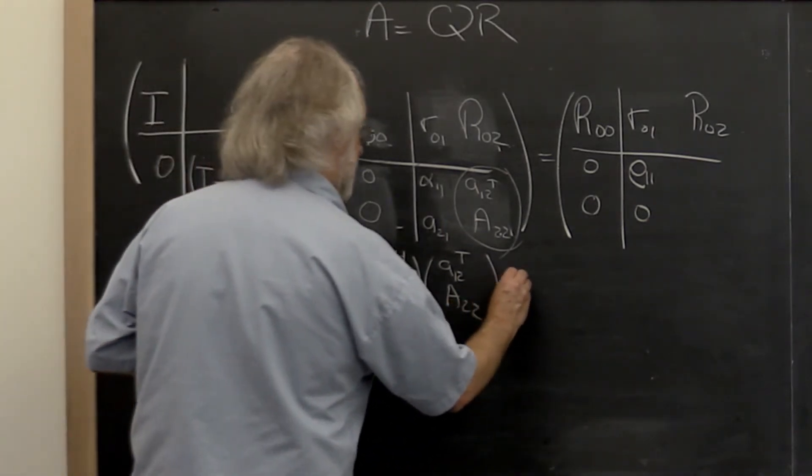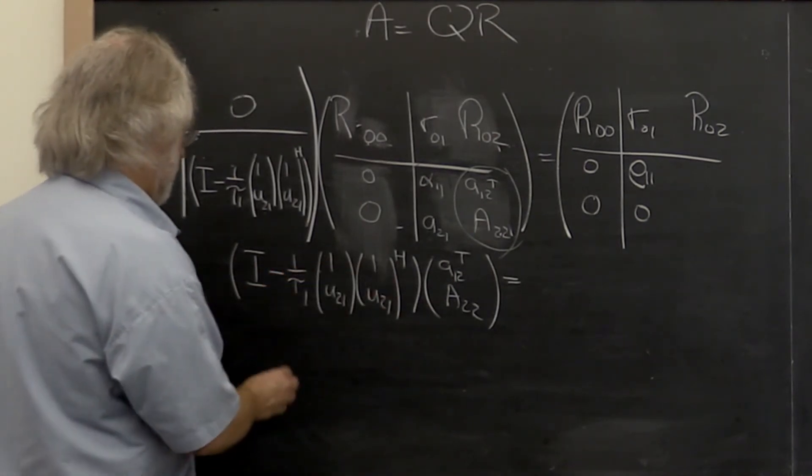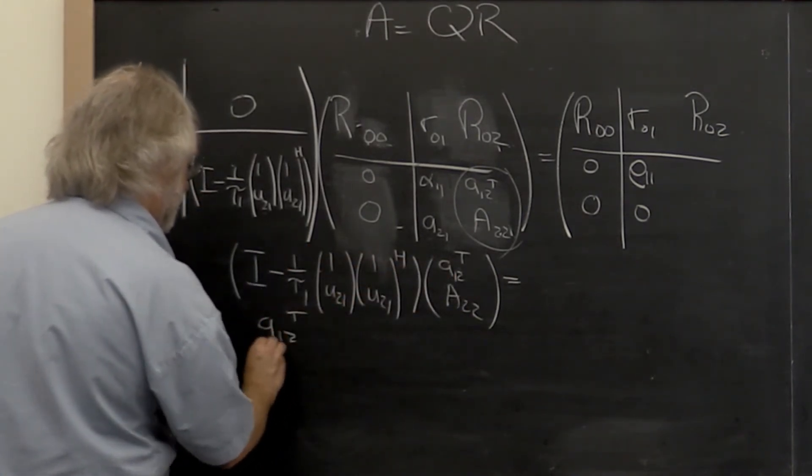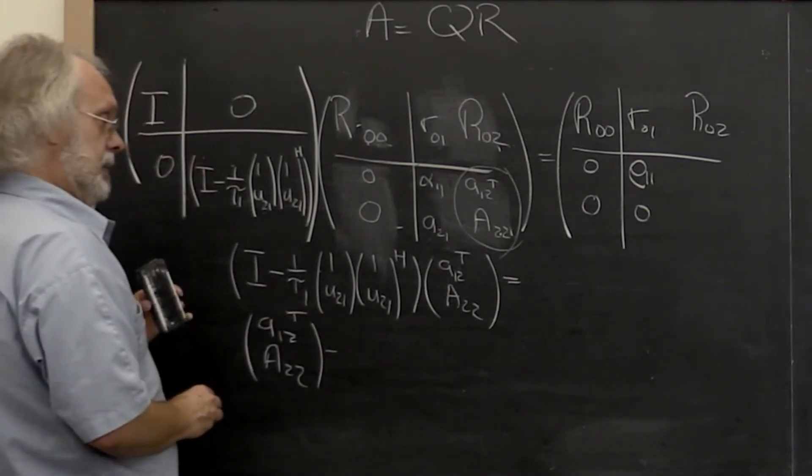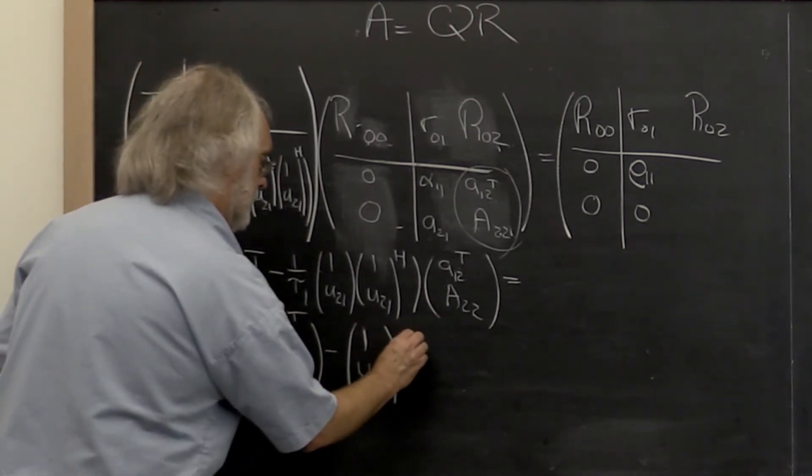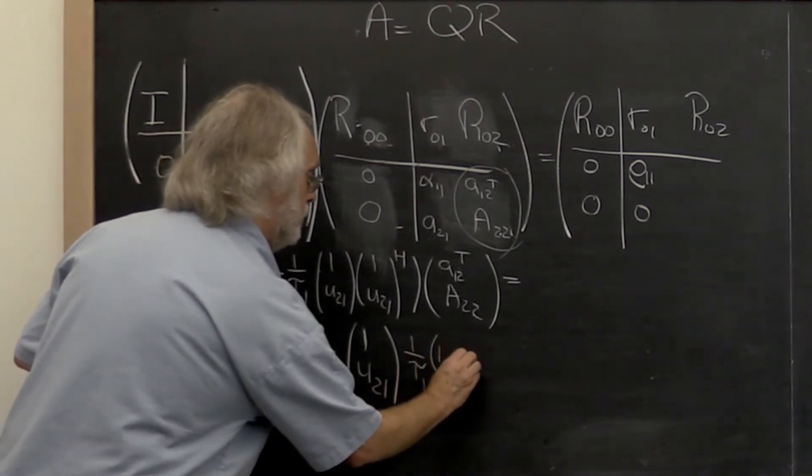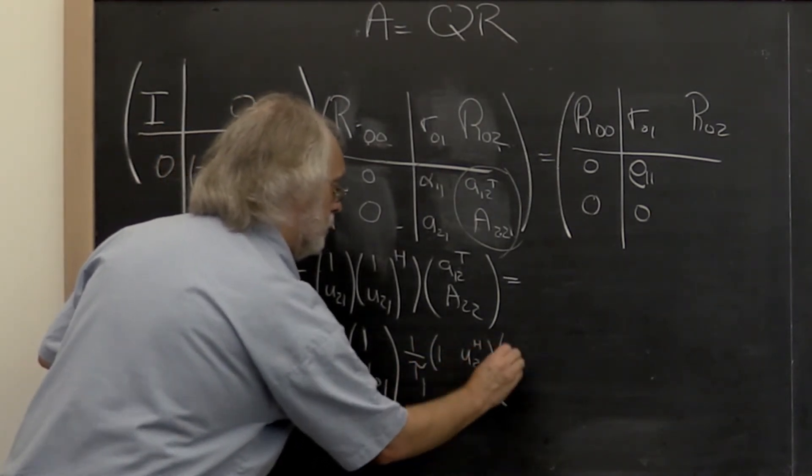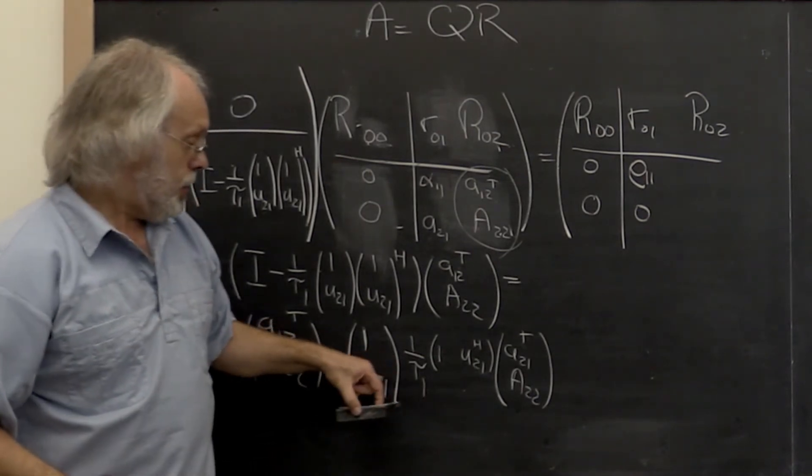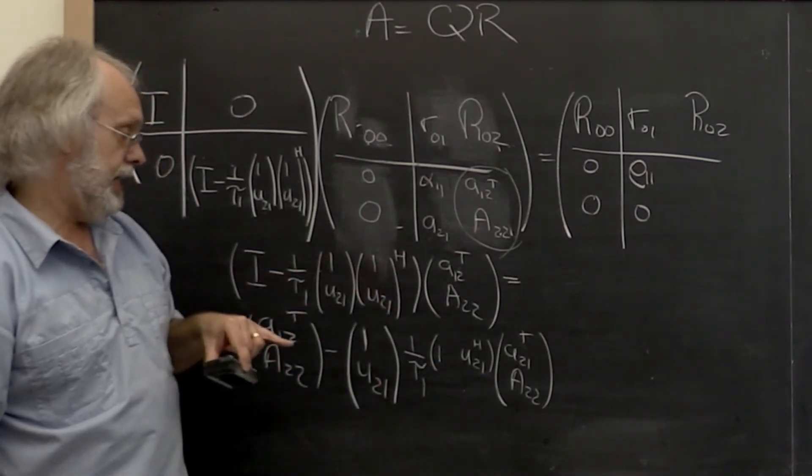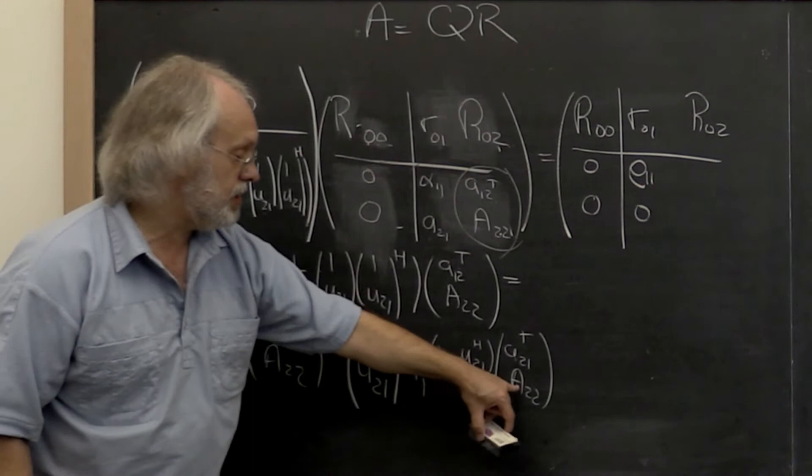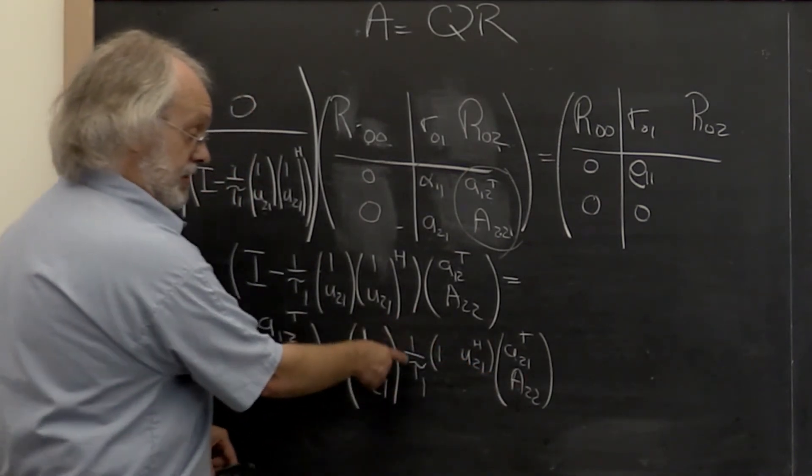So the way you do this instead is you recognize that this can be written as the identity times that minus, and let's rearrange this a little bit. Now by writing it like this, which is equivalent to that, we recognize that we can do 1 times a21 transpose plus u21 Hermitian times a22 and then scale that by a scalar.